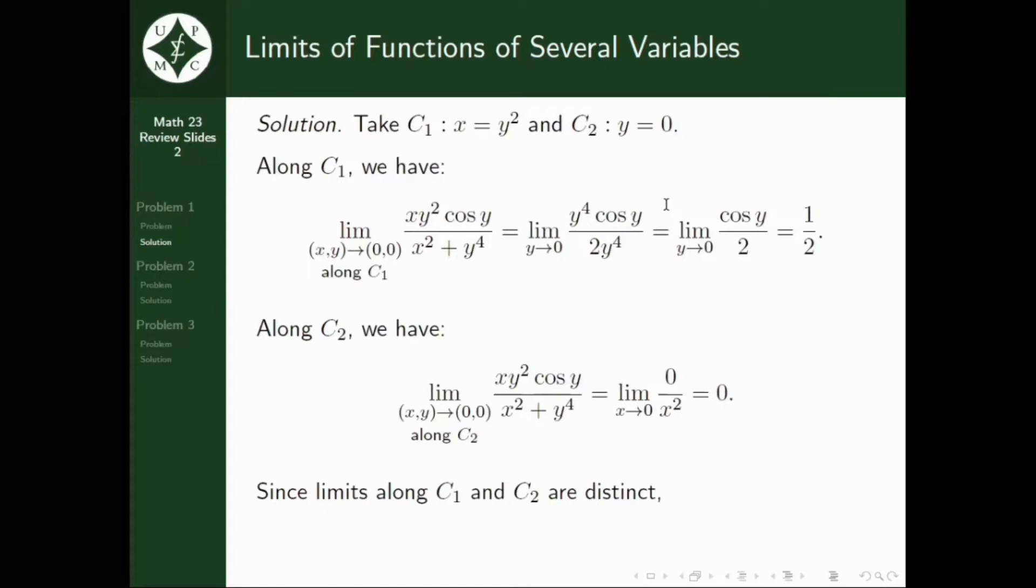So, as we have recalled earlier, since the limits along C1 and C2 are distinct, or hindi sila equal, diba? Well, it's clear that one-half is not equal to 0, it follows that the limit of XY squared cosine Y all over X squared plus Y fourth as XY approaches the origin does not exist.